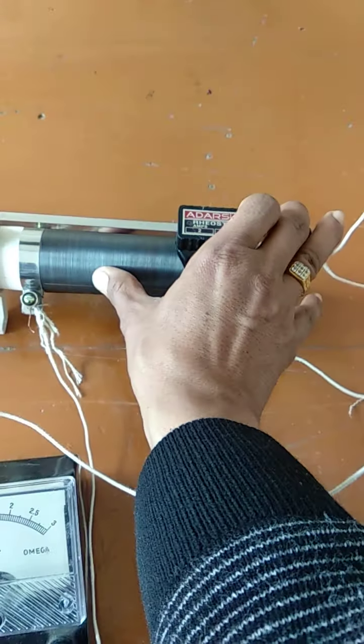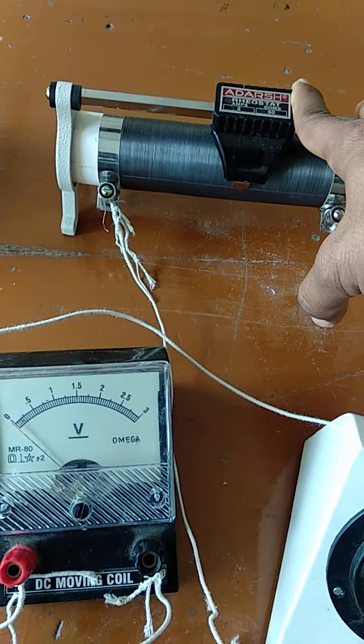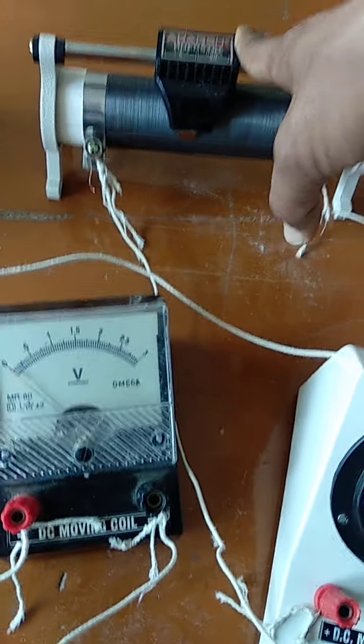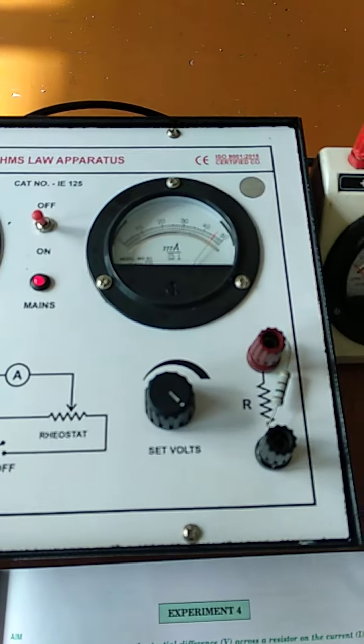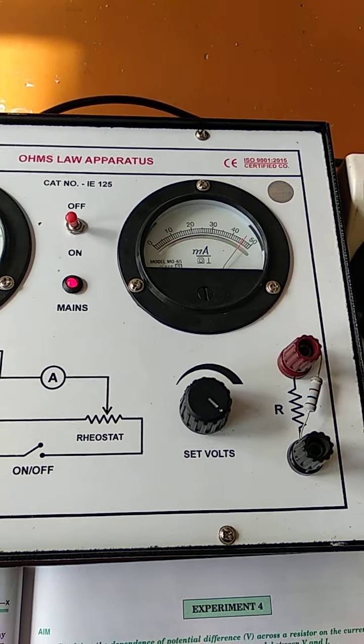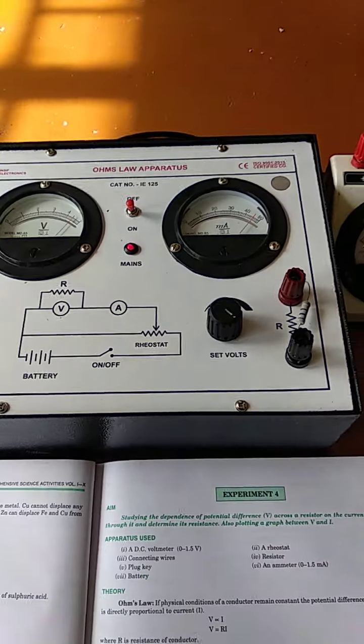You can see this instrument which is called rheostat. This will increase or decrease the resistance. And when there is an increase or decrease in the resistance, what will happen? The current flowing through the wire. If we increase the resistance of a wire, then current flowing through it will also decrease. And if I decrease the resistance, the current will increase, vice versa.